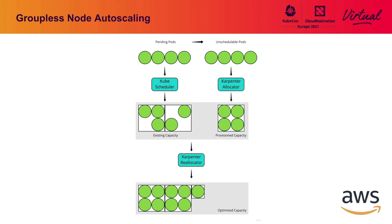The resulting architecture should seem fairly familiar if you know cluster autoscaler. We start with pods that were created and haven't been scheduled yet. The kube scheduler gets the first crack at it — it looks at existing capacity and pending pods and tries to find places to schedule them. If resources aren't available, the kube scheduler sets an unschedulable status condition on the pod. That's when we kick in with a process called the allocator, which looks at pods with that unschedulable status and attempts to create new capacity that can fit those pods, as efficiently packed as possible.